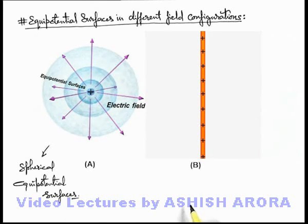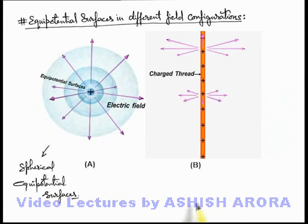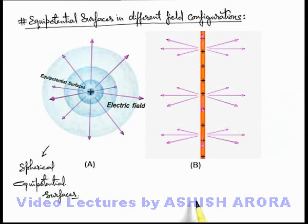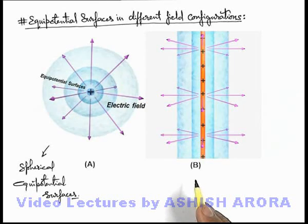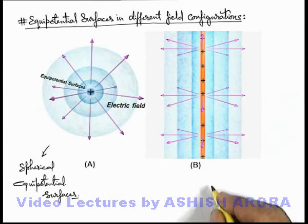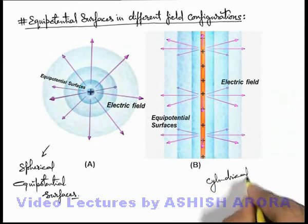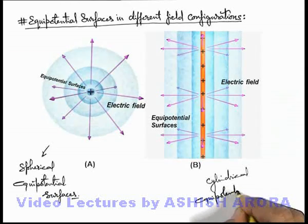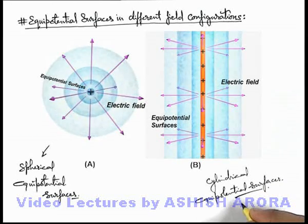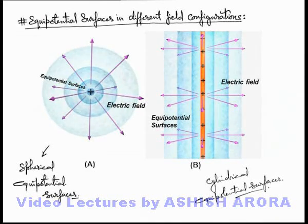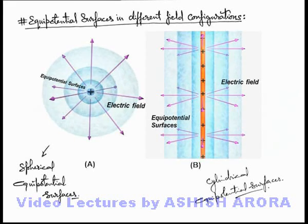Similarly, here you can see this is a very long infinite uniformly charged thread. In the surrounding of this thread we know that the electric field exists in the radially outward direction. If we consider some surfaces in its surrounding at every point of which this electric field is perpendicular, then you can see the surfaces are cylindrical in nature — these are coaxial cylinders. So we can say cylindrical equipotential surfaces exist in the surrounding of a uniformly charged long thread. Always keep in mind that at every point of an equipotential surface the electric field exists in the direction normal to the surface.